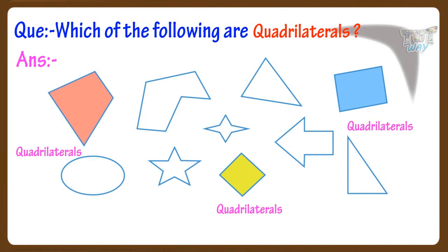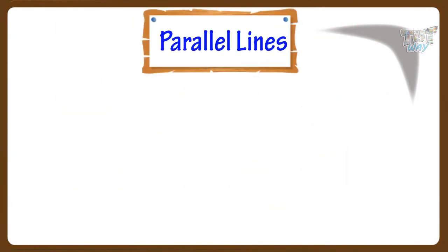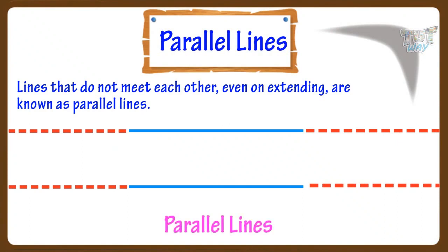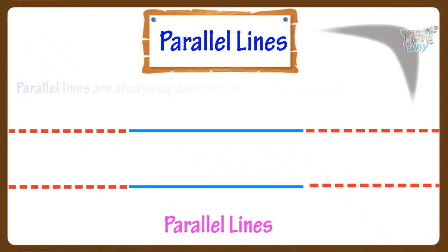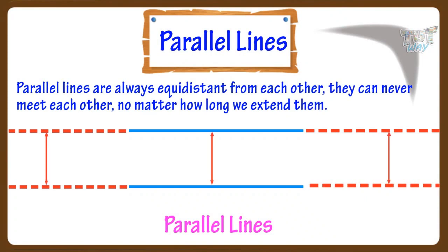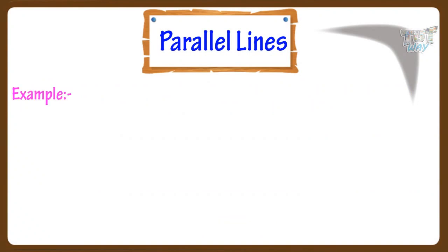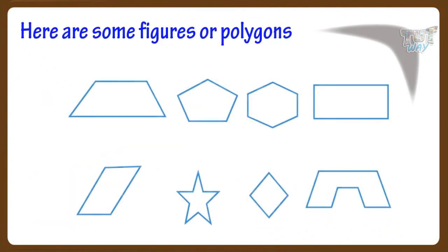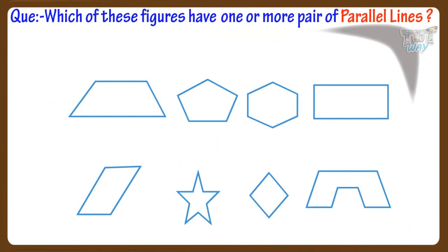Now let's learn what are parallel lines. Lines that do not meet each other, even on extending, are known as parallel lines. Parallel lines are always equidistant from each other — they never meet each other, no matter how long we extend them. These figures have one or more pairs of parallel lines. Let's see which of these figures have one or more parallel lines.